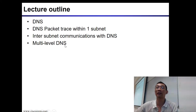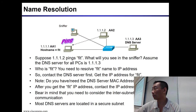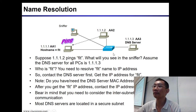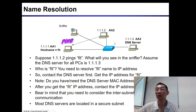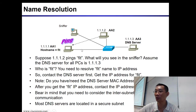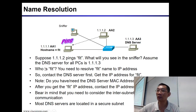Suppose everything is in one network like this. The IP addressing has hostname 1.1.1, the hostname is FIT, and there is a DNS server here. This PC at 1.1.2, instead of pinging the IP address, pings FIT — what will you see in the sniffer? Assume the DNS server for all PCs is 1.1.1.3.